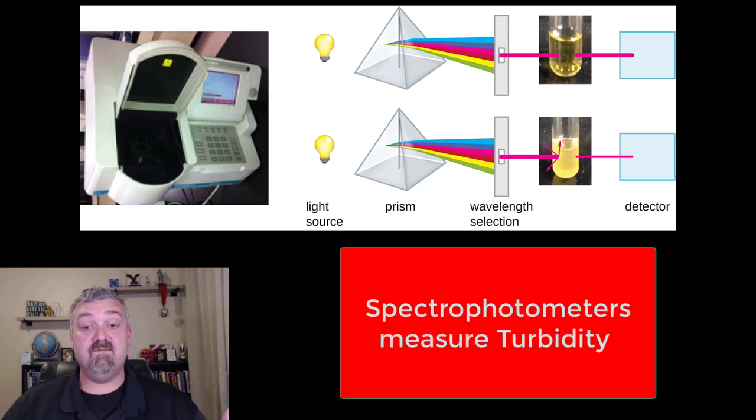Turbidity is a fancy term for cloudy, but by looking at how cloudy or turbid a sample is you have a general idea of how much growth there is.